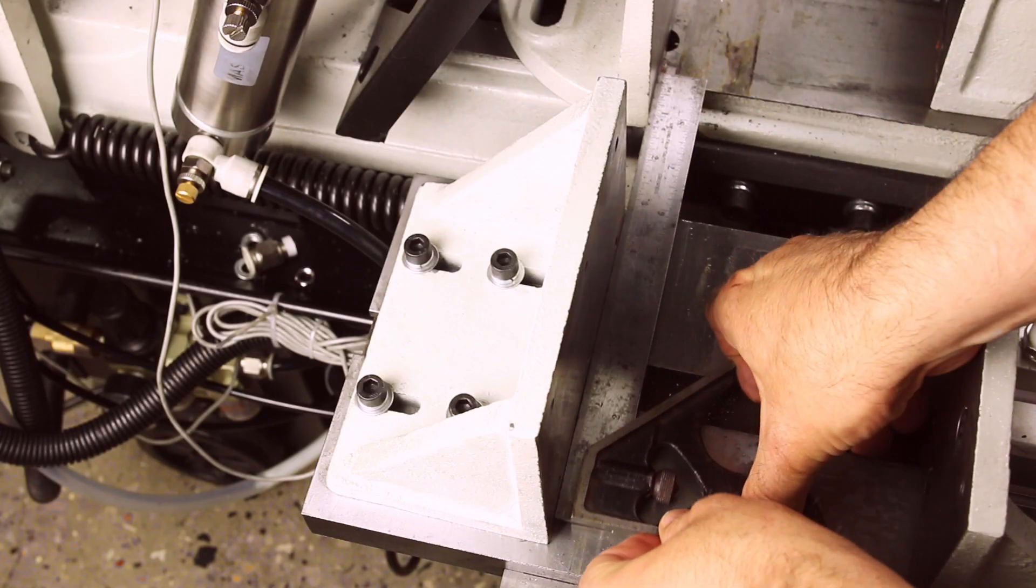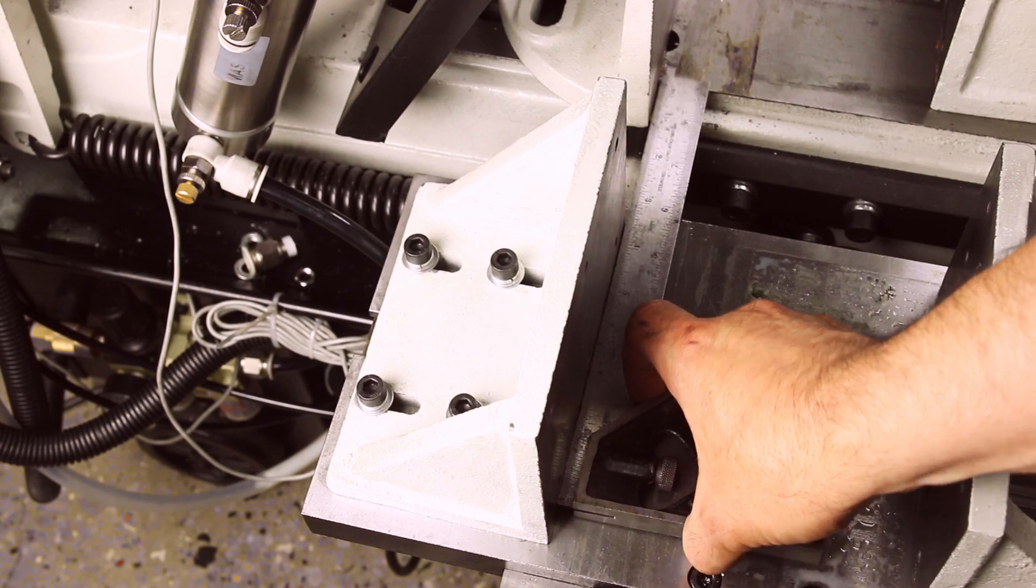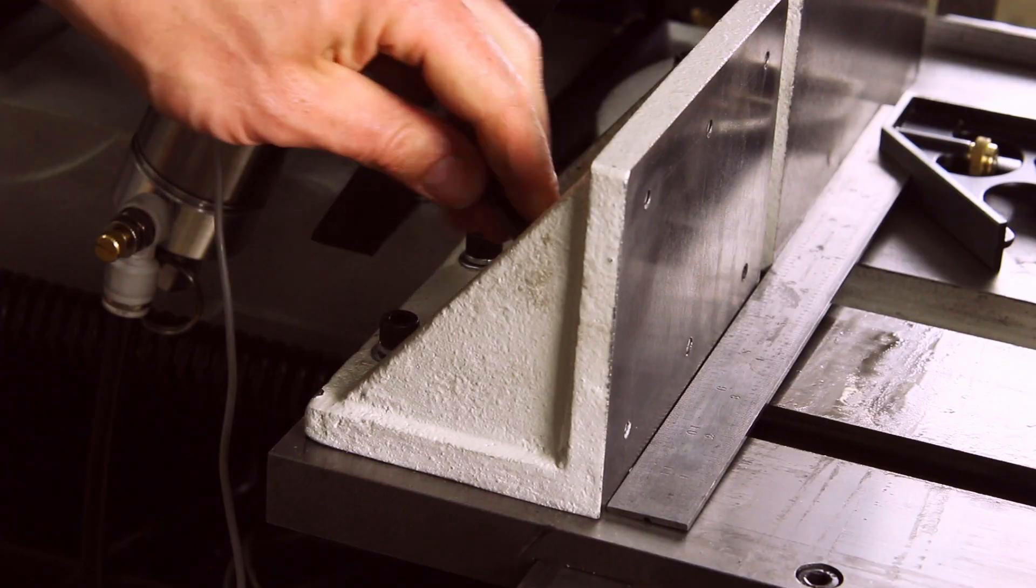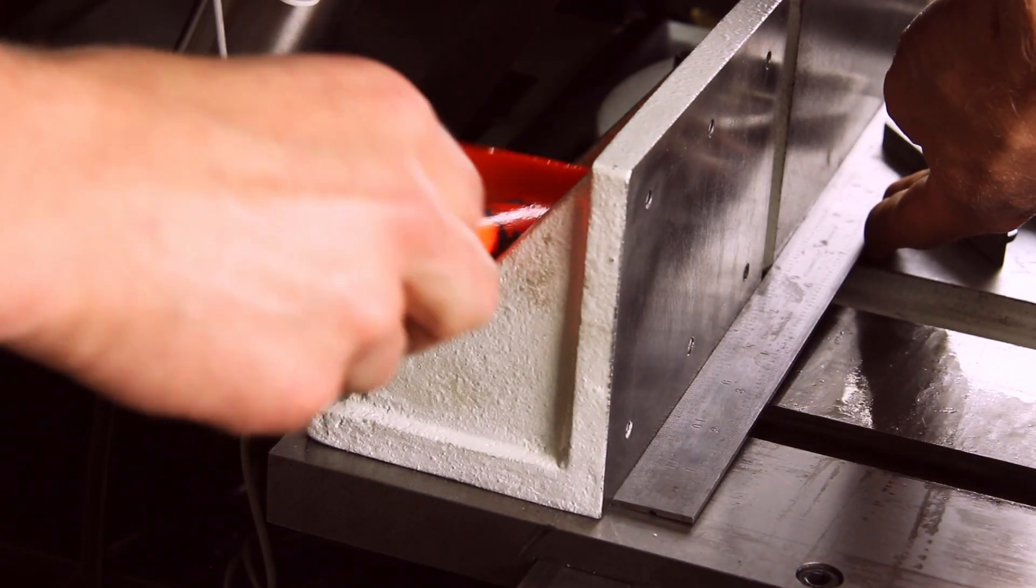Slide the rear jaw up to the fixed jaw and check if they're square against each other. If they are not, loosen the four bolts and adjust the infeed table to match.